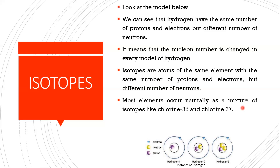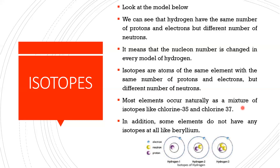Some elements have no isotopes at all, like beryllium. Regarding hydrogen specifically: hydrogen-2 is commonly called deuterium and hydrogen-3 is called tritium. They are the most commonly used isotopes of hydrogen and have vast applications, including being used in making heavy water. Heavy water has different physical properties compared to regular water.